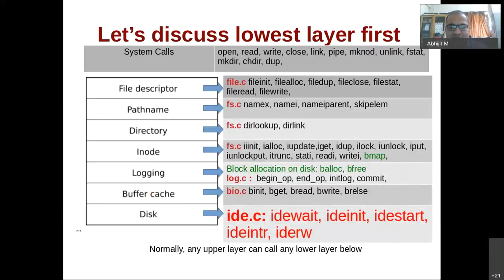Students, we have seen the layer structure of the file system code, and we are going to deal with the lower two layers today — the disk driver code and the buffer cache code. The setup functions for the disk driver are idwait, idinit, idstart, idinterrupt, and idreadwrite. These constitute the code of the device driver for the disk, and on top of it we have the code in bio.c, which is related to buffer cache handling.